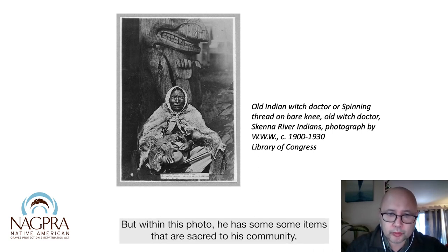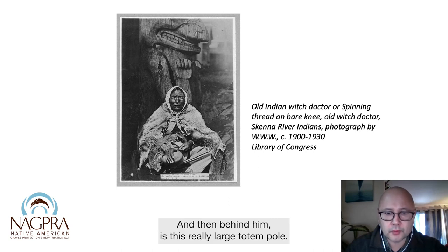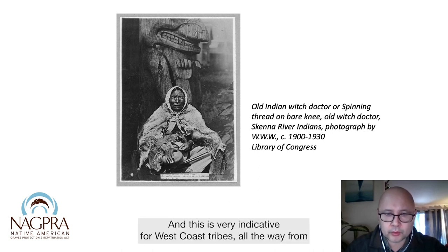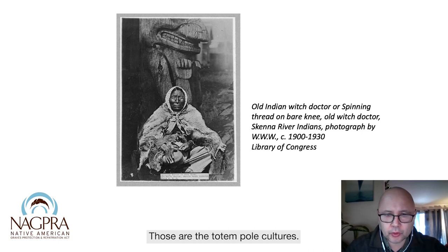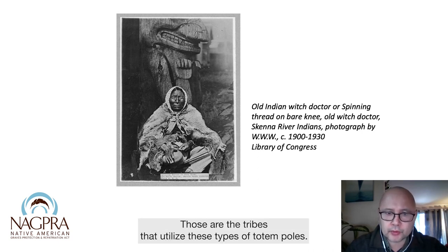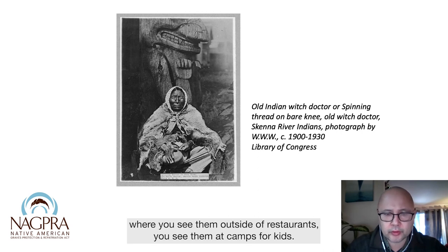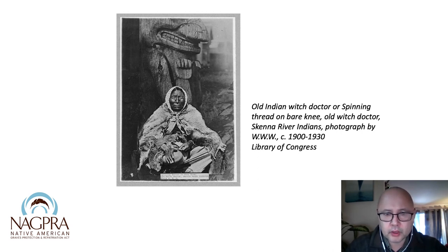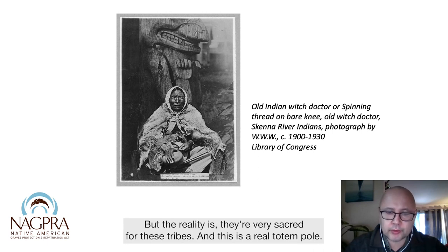Within this photo, he has some items that are sacred to his community — he has this drum, and behind him is a really large totem pole. This is very indicative for West Coast tribes all the way from Washington State up to Alaska. Those are the totem pole cultures. But totem poles have become almost a pop culture item in the 20th century — you see them outside restaurants, at camps for kids. It's become a really generic item within America. But the reality is they're very sacred for these tribes.